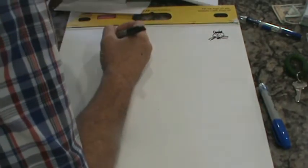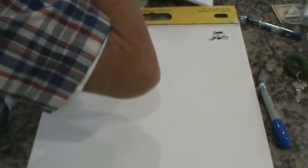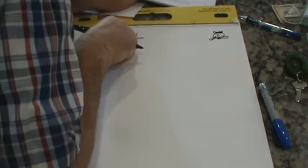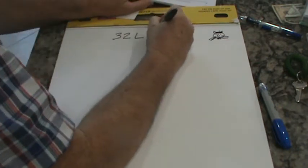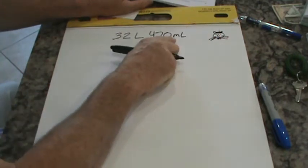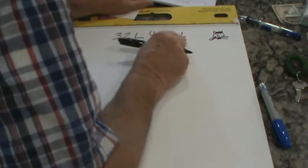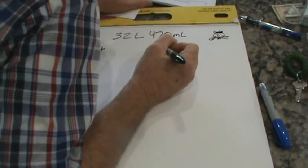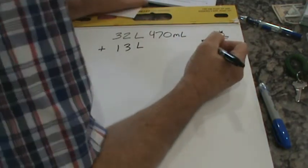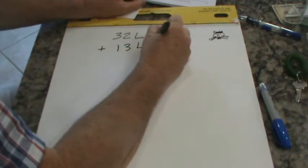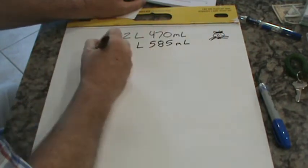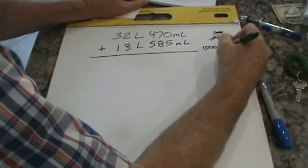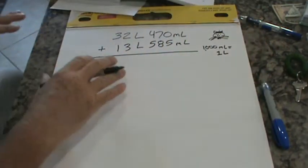I'm going to start out with Mr. Legganese's glasses. 32 liters and that's how we abbreviate liters, capital L. 470 milliliters and how we abbreviate milliliters is a lowercase m, capital L. And we're going to add on plus 13 liters and 585 milliliters. Remember, 1000 milliliters equals 1 liter. One simplifying strategy is we just add this like this. So put ML down here to show the milliliters.